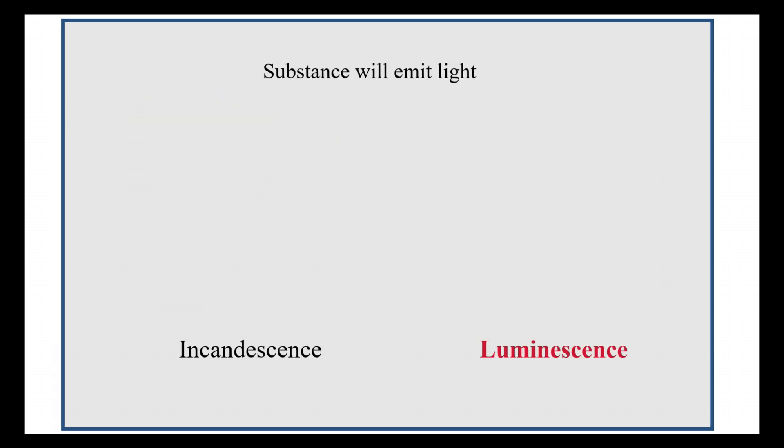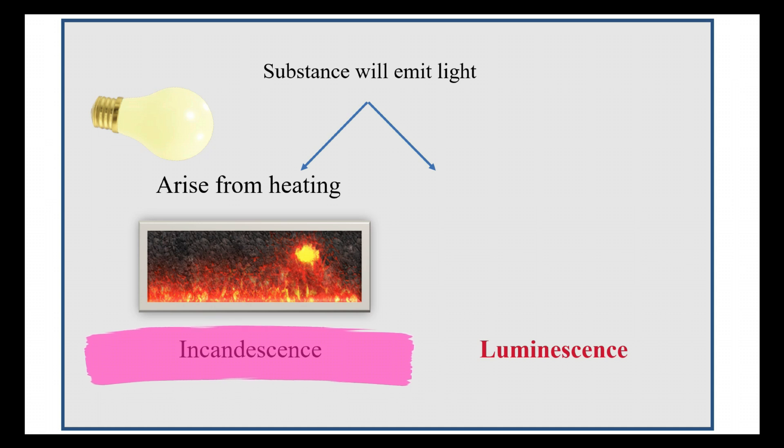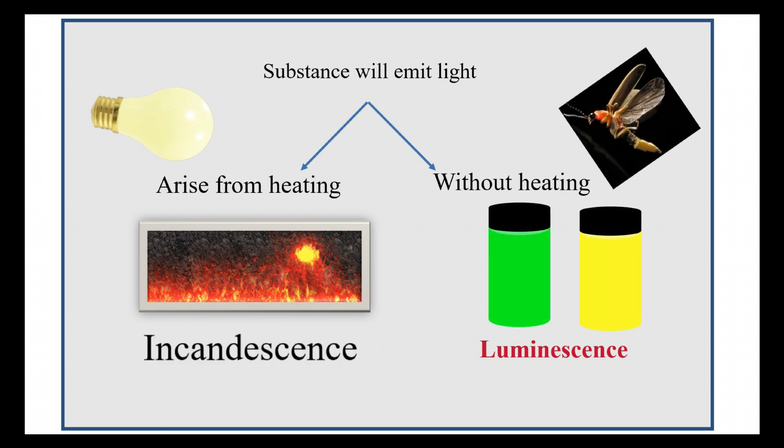Thus, a substance will emit light either by heating—for example, a glowing hot ember or bulb, which is called incandescence—or in some cases, light emission without heating, for example, glowing materials, fireflies, some jellyfish, etc. This is called luminescence.